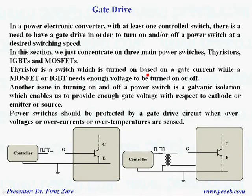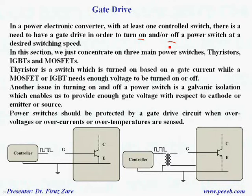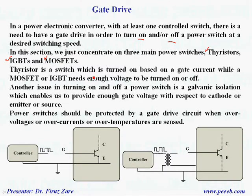In a power electronic converter with at least one control switch, there is a need for a gate drive in order to turn on and/or turn off the power switch. We concentrate on three different switches: thyristors, IGBTs, and MOSFETs. A thyristor is a special switch — we can only turn it on by applying a gate signal. For MOSFET and IGBT, we can turn on and turn off by applying and removing the gate signal.